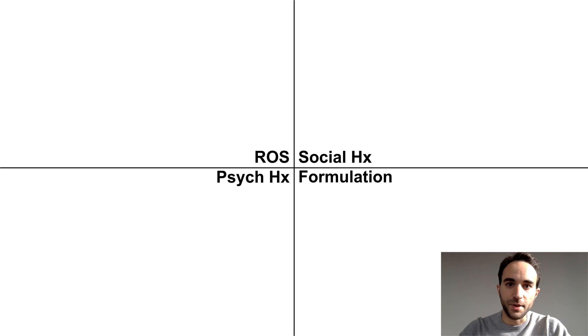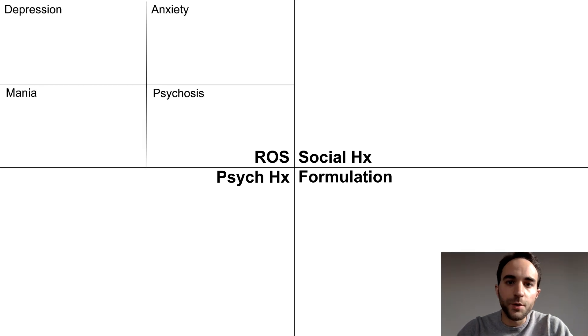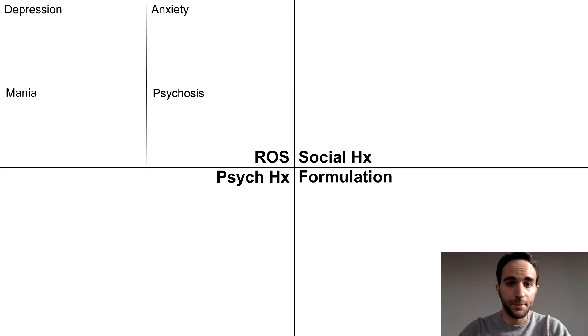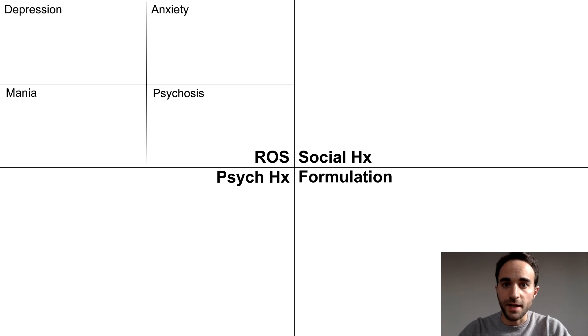We'll start in the top left with the review of symptoms. The four symptom clusters you should usually ask about are represented here with the mnemonic DAMP: depression, anxiety, mania, and psychosis.